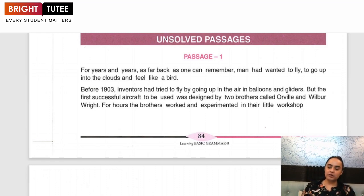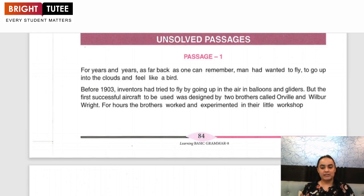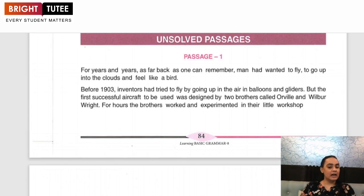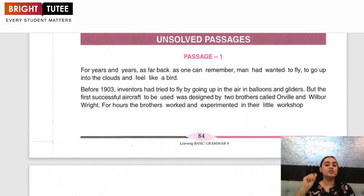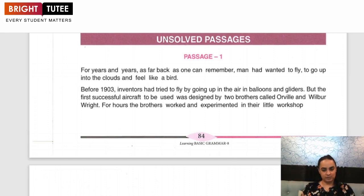Learning your literature chapters and writing their answers is something which is mechanized reading, because your teachers make you learn every word and every meaning. But when it comes to reading comprehension, the passages or the poems that you get are unseen, and therefore it requires every child's own intelligence and intellect to answer those questions.